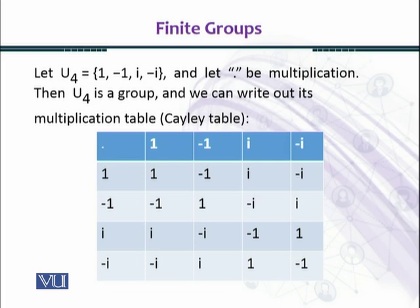(-iota)×iota=1, (-iota)×(-iota)=-1. From the table, -1 is the multiplicative inverse of -1, iota is the multiplicative inverse of -iota, and -iota is the multiplicative inverse of iota, and the inverse of 1 is 1. The closure property is satisfied because in each row every entry appears exactly once.